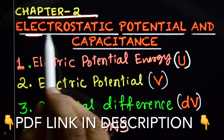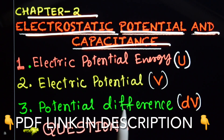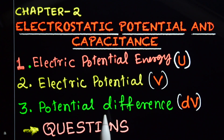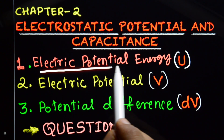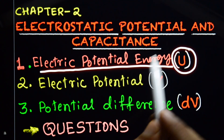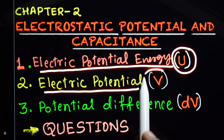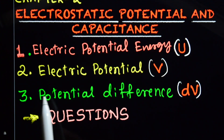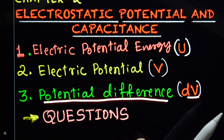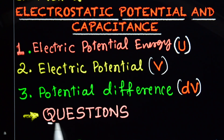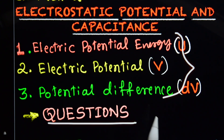Chapter 2: Electrostatic Potential and Capacitance. I will now discuss these topics. First one: Electric Potential Energy, denoted by U. Electric Potential, V. Potential Difference, dV. And the last topic is where we are going to discuss a few questions on these topics.